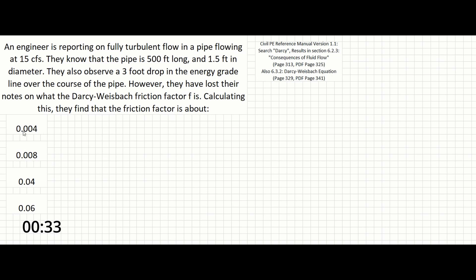We are solving for the Darcy-Weisbach friction factor. The first thing to do is use our reference manual and search for Darcy. This brings you to page 313, where we can get the equation: HF equals F times L over D times V squared over 2G, where HF is the head loss in feet, F is the Darcy-Weisbach friction factor, L is the pipe length, D is pipe diameter, V is the velocity, and G is gravity.